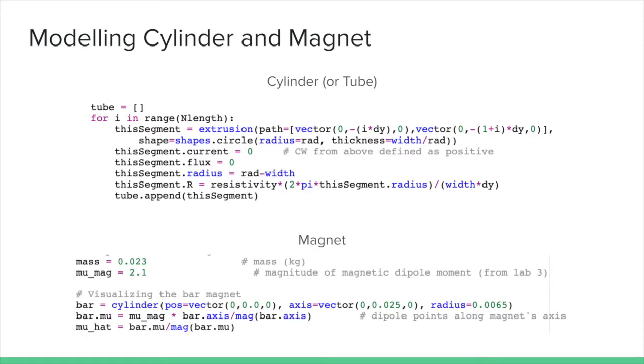Using the GlowScript IDE and VPython, let's model our cylinder, or tube, and magnet. The tube is a list of ring objects with position, radius, thickness, current, flux, and resistivity properties. The magnet is represented as a cylinder with a property for the magnetic dipole moment, μ.